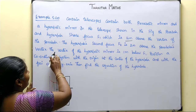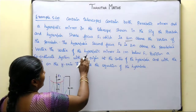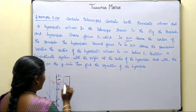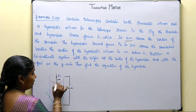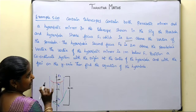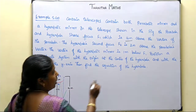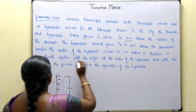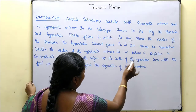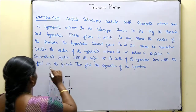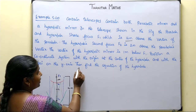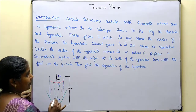The vertex of the hyperbolic mirror is 1 meter below f1. We position a coordinate system with the origin at the center of the hyperbola and with the foci on the y-axis. Then we find the equation of the hyperbola.